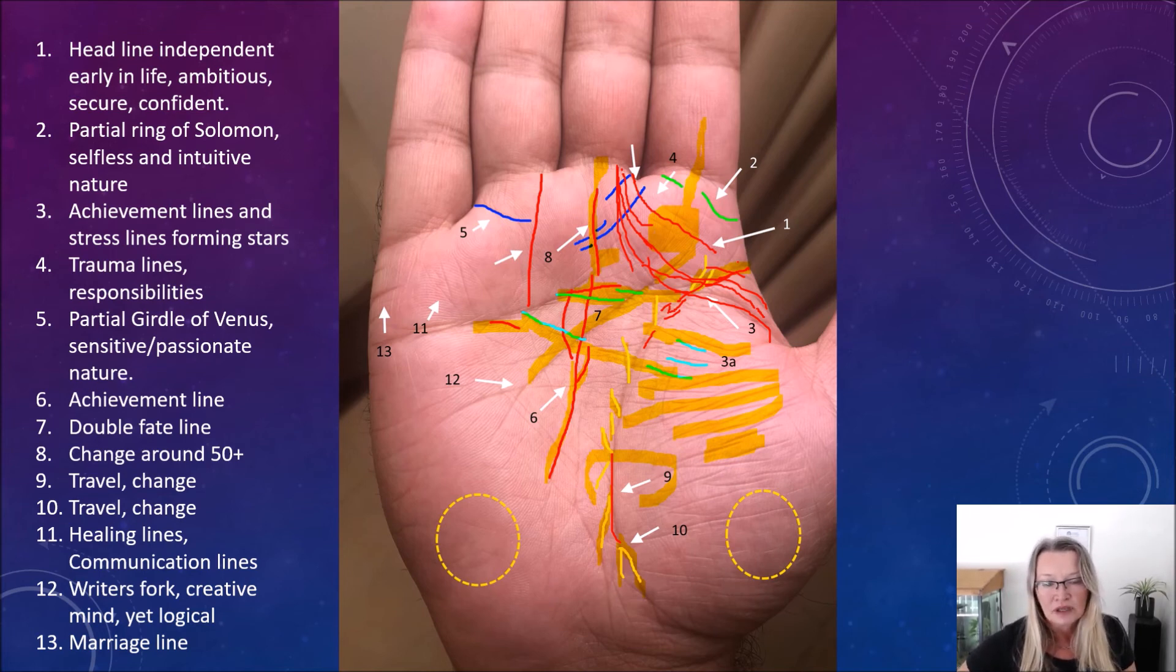Now number 11. He has some nice clean healing lines, which are on the area of the mercury, which enhance communication. So some people call them communication lines. And it makes sense if this person especially is a lawyer, it makes sense that he has some empathy for his clients. He's not a cold hearted lawyer, as some of them are known to be.